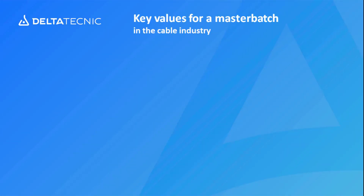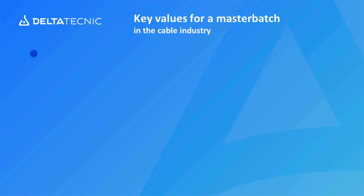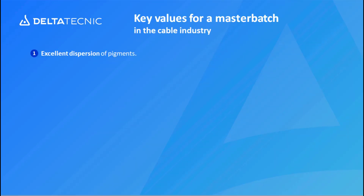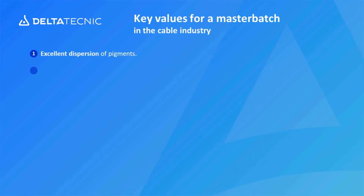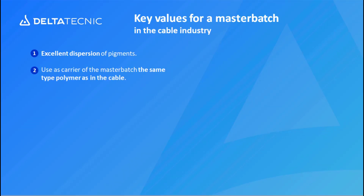The key values for a masterbatch in the cable industry: number one is excellent dispersion. If a masterbatch is not well dispersed, the masterbatch manufacturer has not done a good job. This is the job of the masterbatch manufacturer — you as a cable manufacturer must expect the highest levels of dispersion quality from your masterbatch supplier. This is critical; it is one of the main values of a color concentrate.